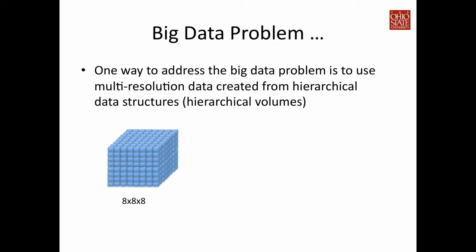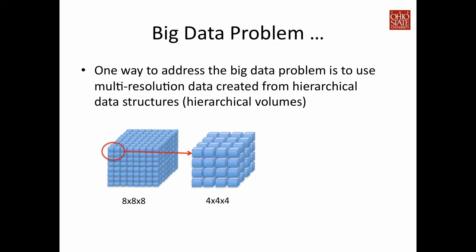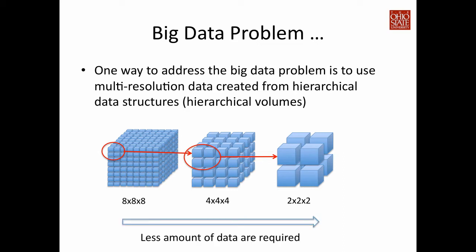Let me give you an example. Initially we have a W by H by D volume data. You can average every 2x2x2 voxels and store only the average value, creating low resolution data at 4x4x4. You can further average those 2x2x2 voxels at low resolution to create an even lower resolution, down to 2x2x2, which only takes up 1/64th of the space compared to the raw data. This minimizes space cost and also reduces the amount of computation needed for visualization.